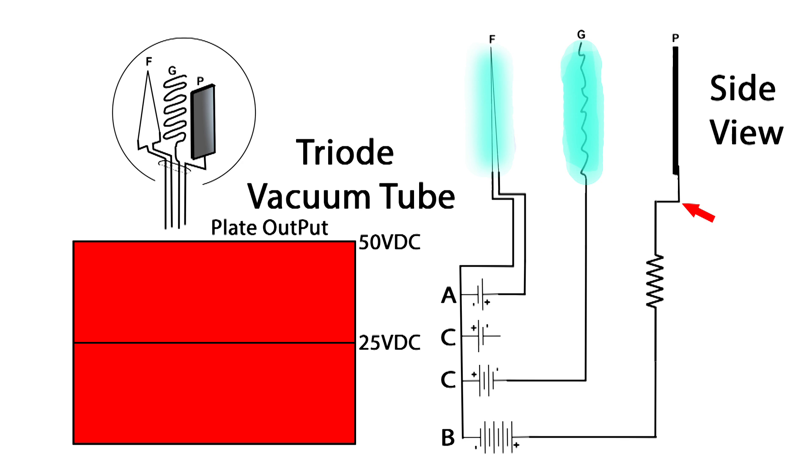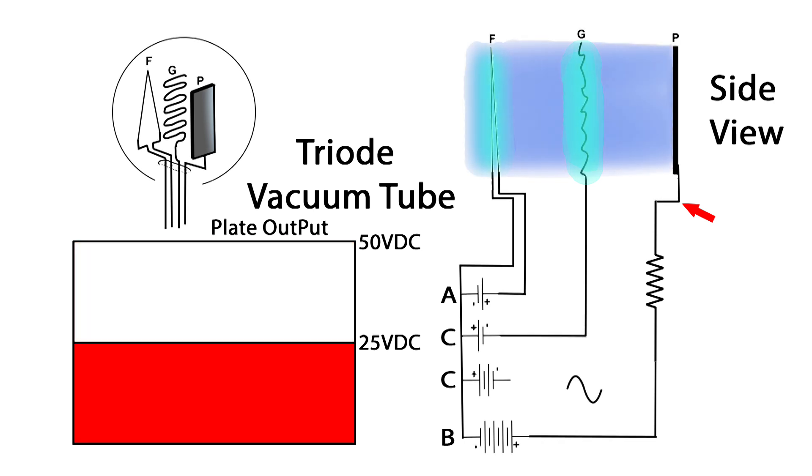On the left we have a large area that's red. And it is the output from the plate. And if you take a look at the right, I've got an arrow of where we're measuring this from. And the most voltage that we can have on the plate is 50 volts. We still have the grid biased high enough negative that there's no electrons flowing from the filament to the plate. Now what I want to show is, how does the triode tube amplify a signal? Well we're going to change the biasing on the grid.